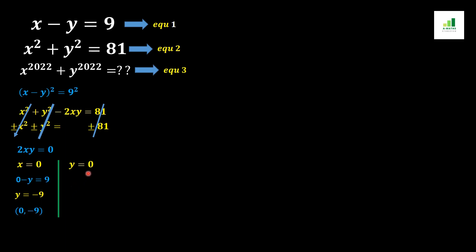When I substitute y equals 0 into equation 1, I get x minus 0 equals 9, which simplifies to x equals 9. This gives us the second ordered pair (9, 0).